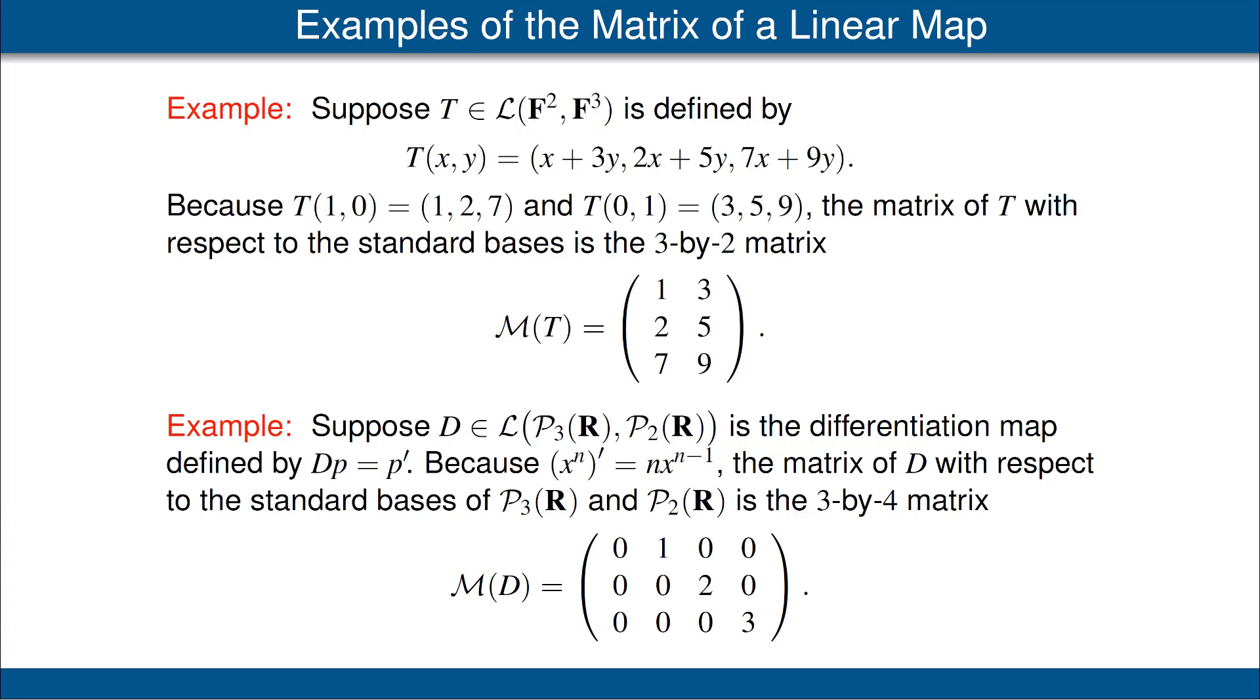For our next example, let D be the linear map from the vector space of polynomials with degree less than or equal to 3 mapping into the vector space of polynomials with real coefficients with degree less than or equal to 2, and D is defined by D of a polynomial as its derivative. The standard basis of P₃(R) is the list 1, x, x², x³, and the standard basis for the vector space P₂(R) is the list 1, x, x². Let's find the matrix of our linear map D with respect to these standard bases.